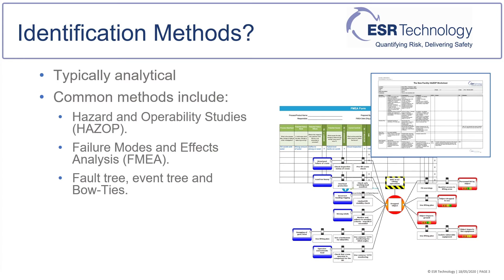Similarly, Failure Mode Effect Analysis, FMEA, examines all potential failure modes of a piece of equipment to determine what the effects on the system are. Fault trees and event trees may be combined to form bow ties around a central event such as loss of containment.